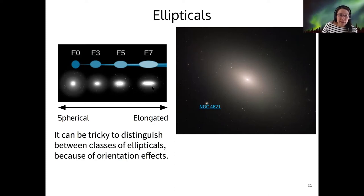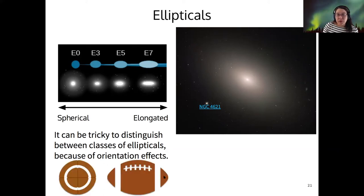And it can be tricky to distinguish between these classes because of orientation effects. And what I mean by that is, imagine that you have an E7, it's kind of like a football shape, right? If we're seeing it side on, then we'll see its full football shape. But if we're looking at it edge on, then it'll look maybe more like an E0. And so just by looking at an elliptical, that's not necessarily enough to fully categorize its type.